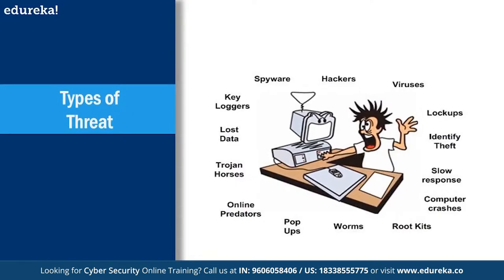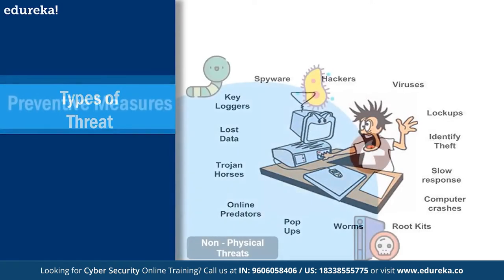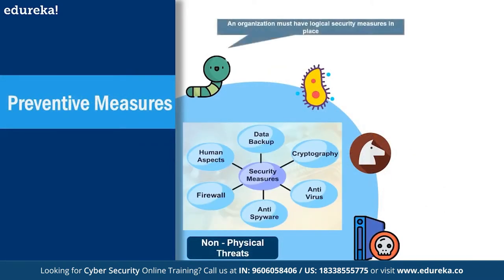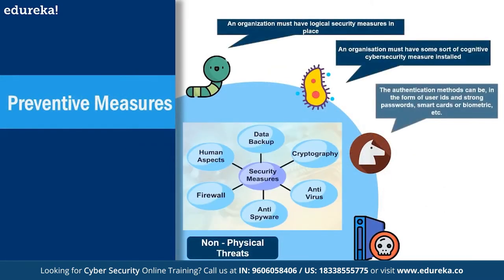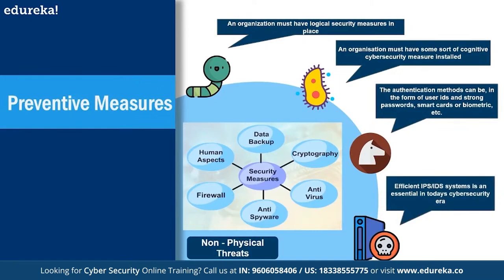Types of threats include viruses, lockups, identity theft, slow response, crashes, rootkits, bombs, pop-ups, and many more — including ransomware and threats over Wi-Fi and wireless networks. It is not always something wired that you are dealing with; threats can come through wireless connections as well.